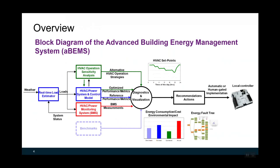This slide shows the block diagram of the Advanced Building Energy Management System. There are six key components. The first is the real-time load estimator. The second is the HVAC and power monitoring system through the building management system. The third is the HVAC power system and control model. The fourth is the HVAC operation sensitivity analysis. The fifth is diagnosis and visualization. The last is recommendation actions.